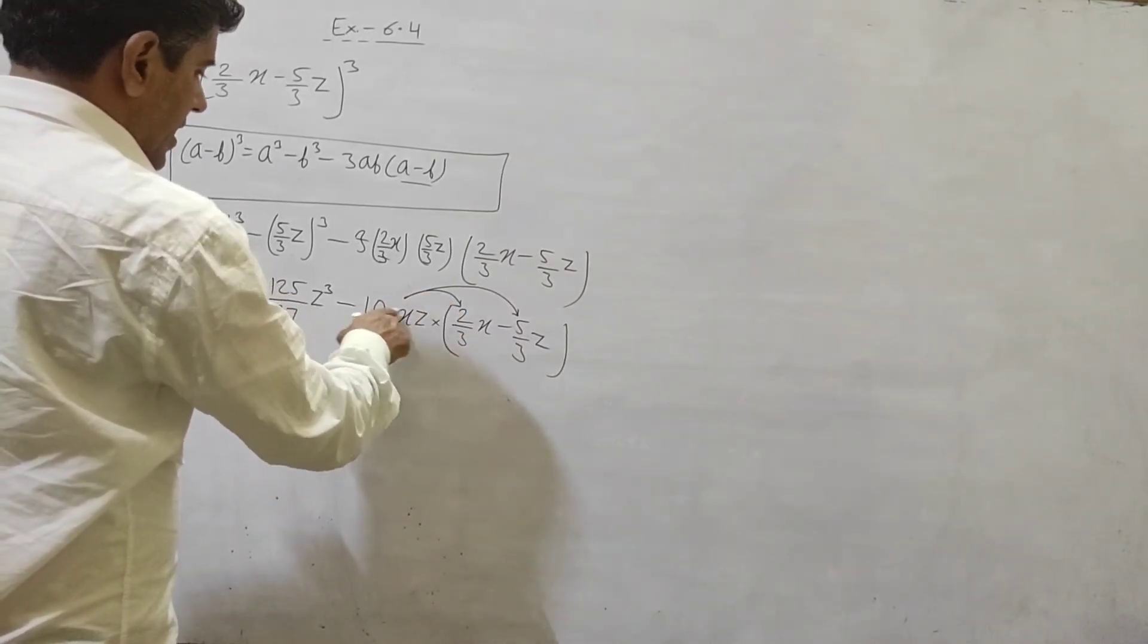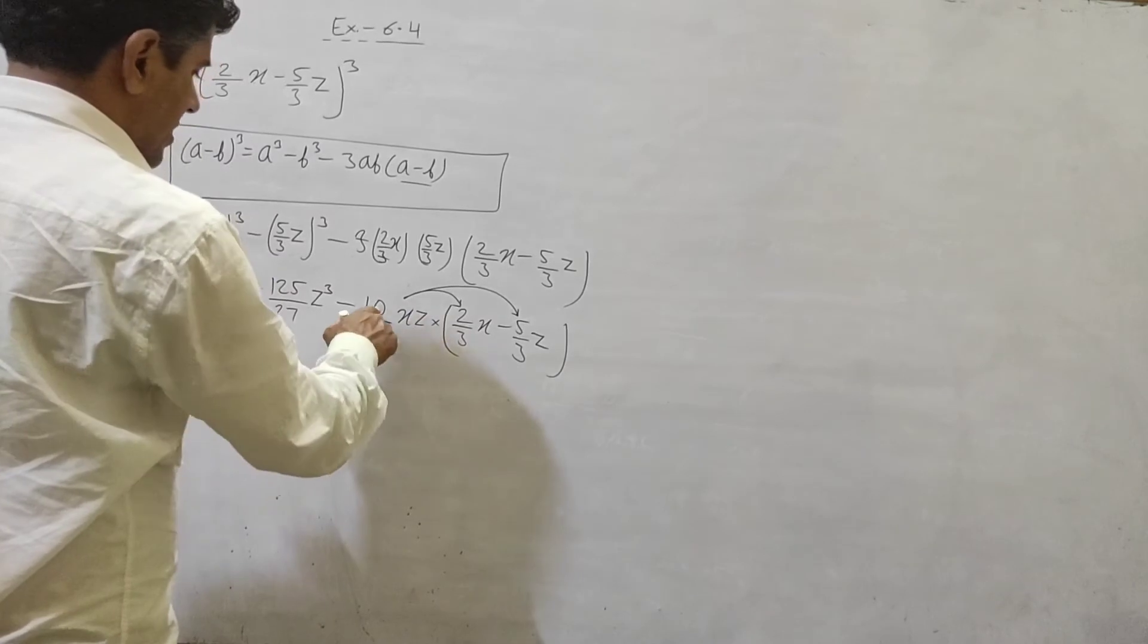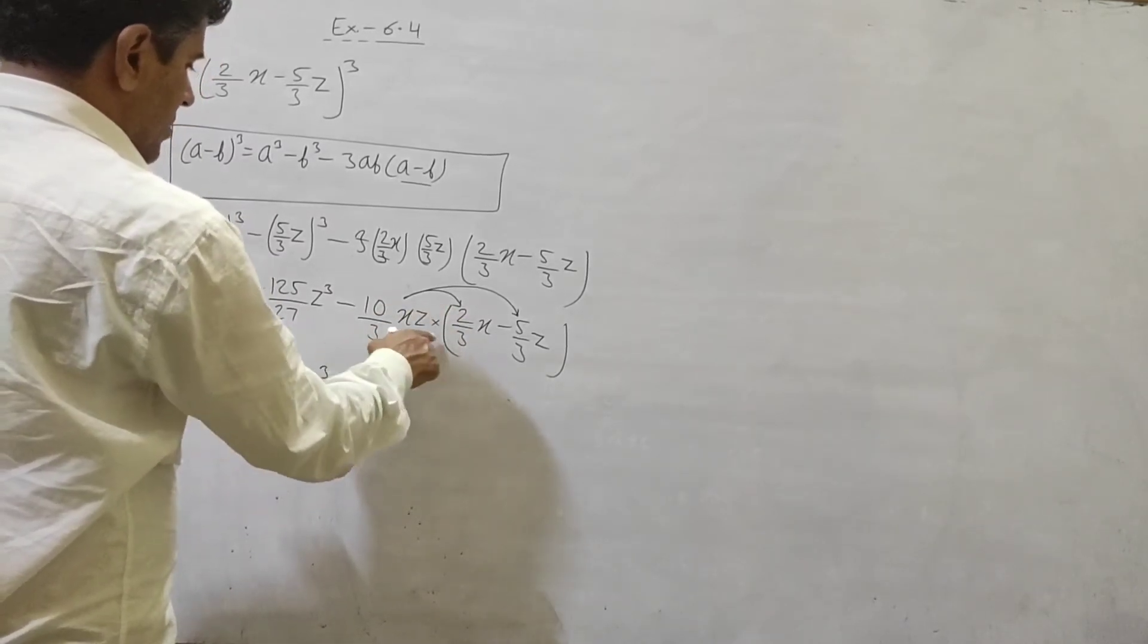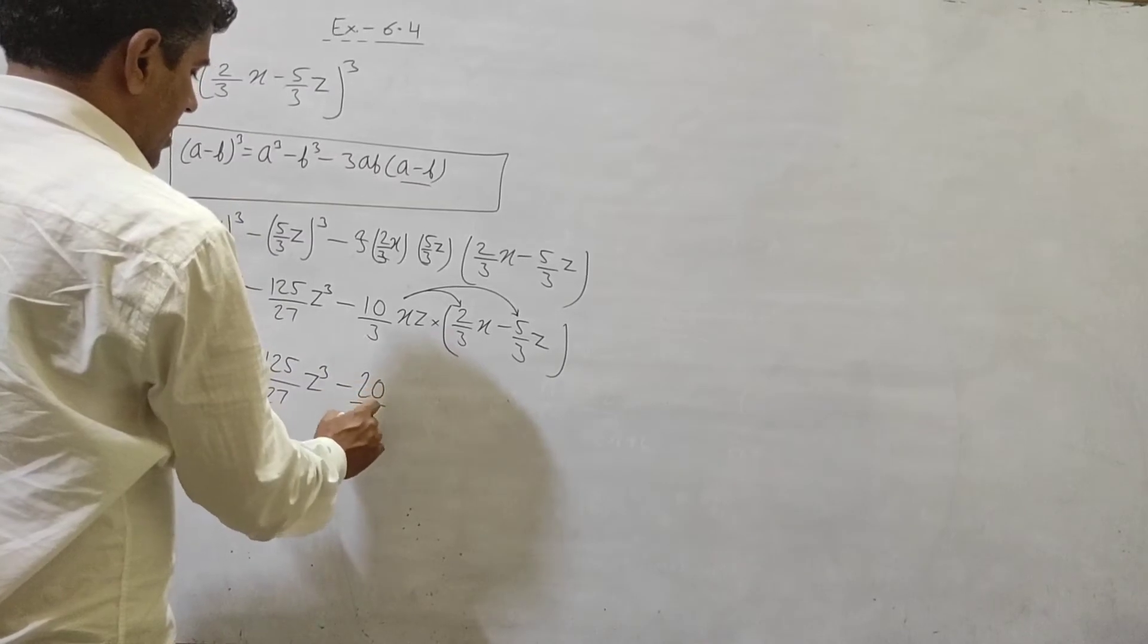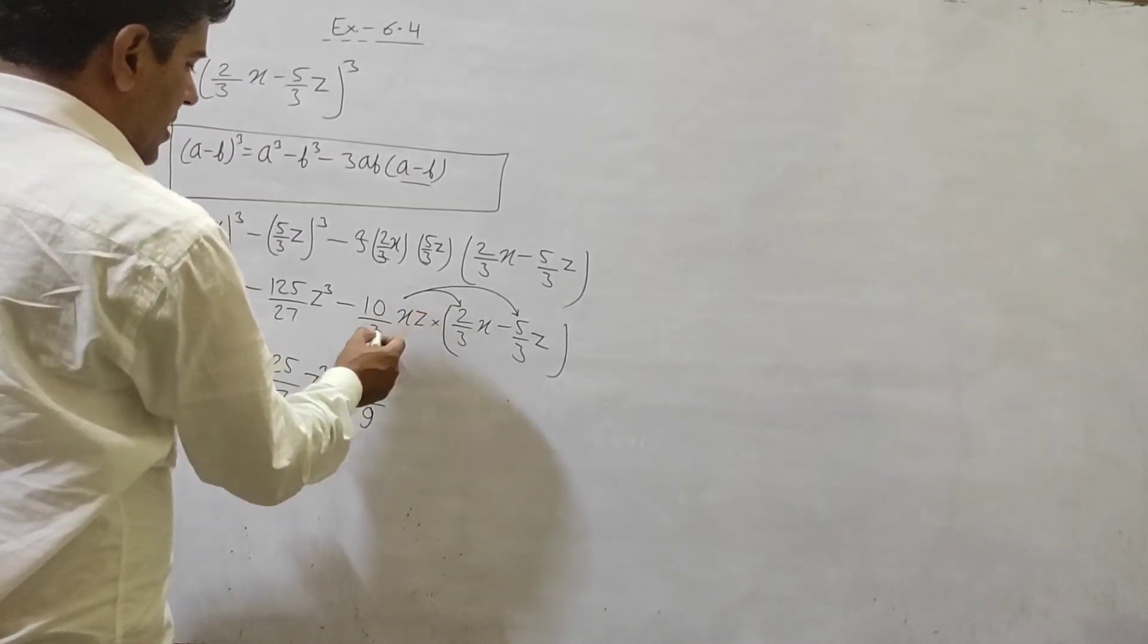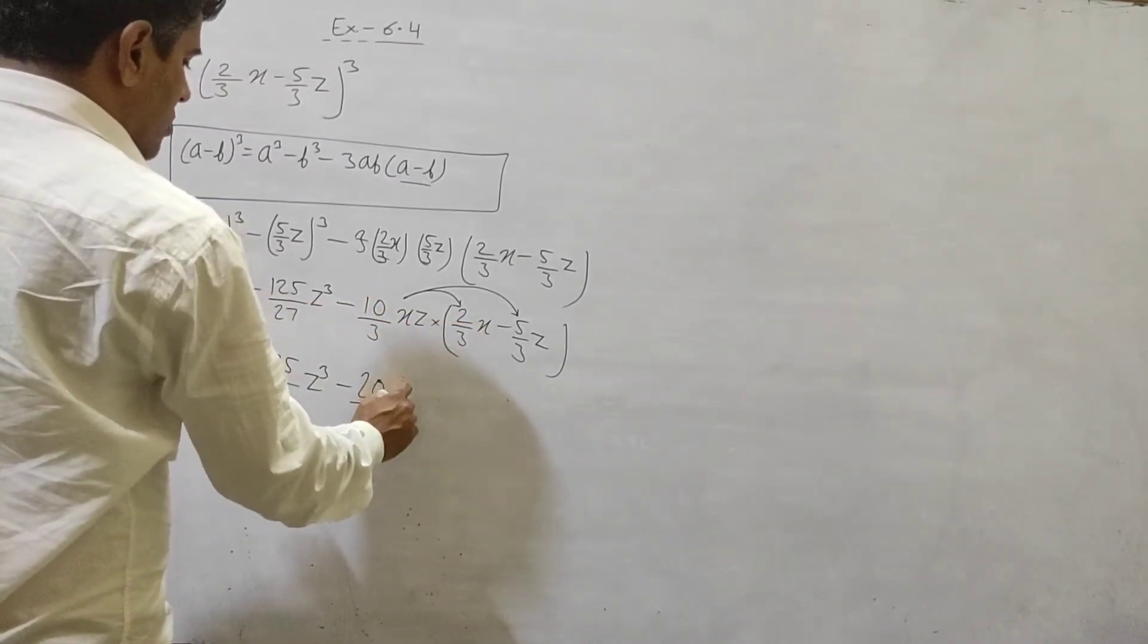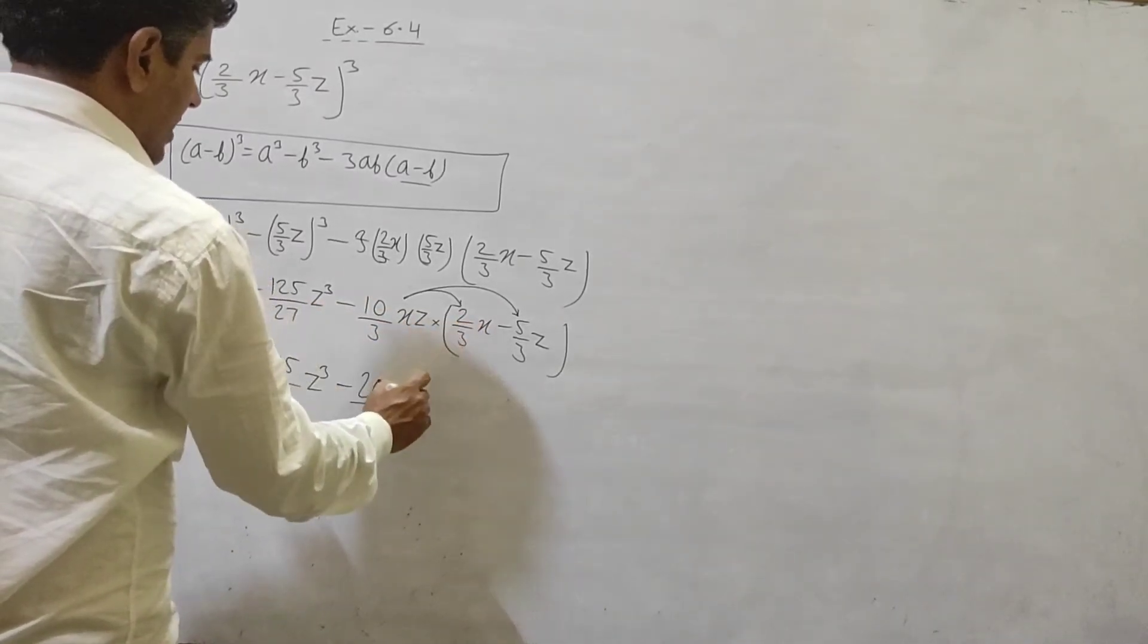Thisse multiply like da hai, minus plus minus. 10 multiply 2, 20. 3 multiply 3, 9. Numerator numerator se multiply, denominator denominator se. x, x, x square. z single hai hai, ke la hai.